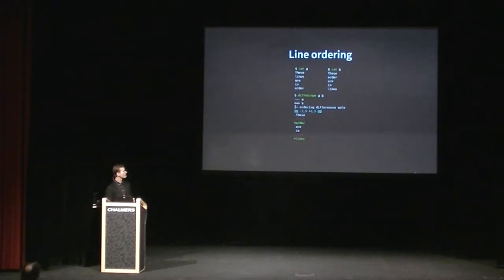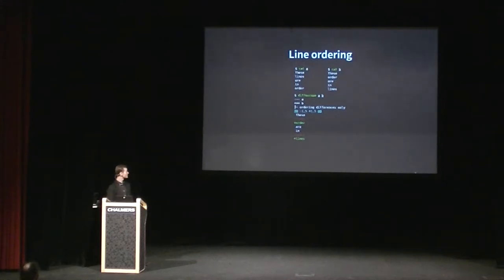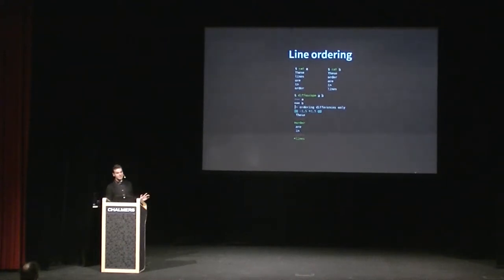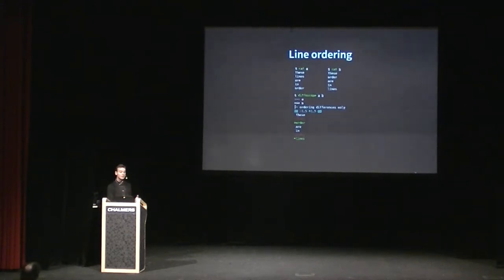It also supports more advanced detection of diffs. For example, file A contains 'these lines are in order' and file B contains 'these order are in lines.' You run Diffoscope on them and it'll say the files are basically the same but there are just ordering differences. This is really useful because if something has been sorted non-deterministically, you can take that information and figure out what you need to change in your build process to just sort those lines — and then the build will be reproducible.